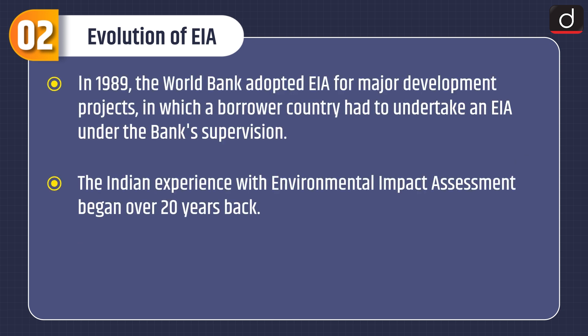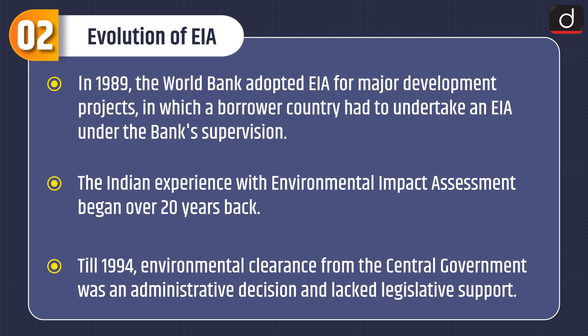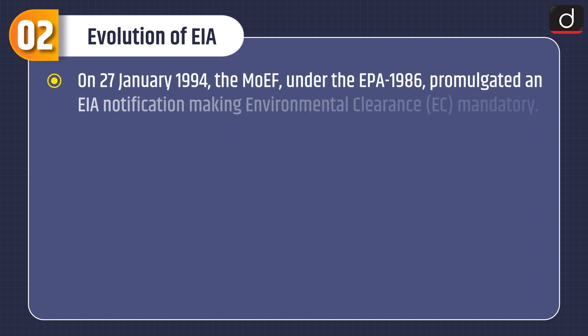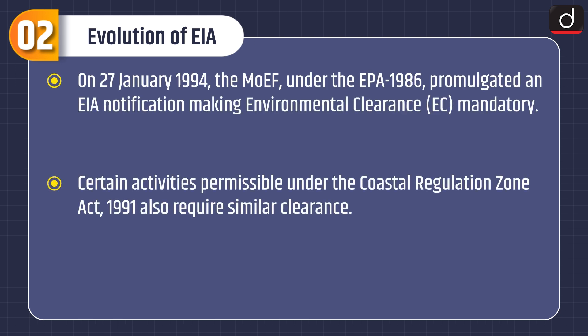In 1989, the World Bank adopted EIA for major development projects, in which a borrower country had to undertake an EIA under the bank's supervision. The Indian experience with environmental impact assessment began over 20 years back. Till 1994, environmental clearance from the central government was an administrative decision and lacked legislative support. On 27 January 1994, the MOEF under the EPA 1986 promulgated an EIA notification making environmental clearance mandatory. Certain activities permissible under the Coastal Regulation Zone Act 1991 also require similar clearance.